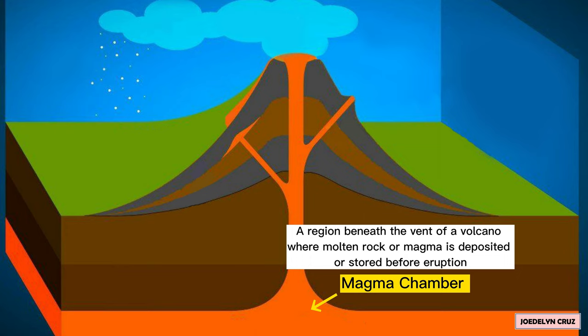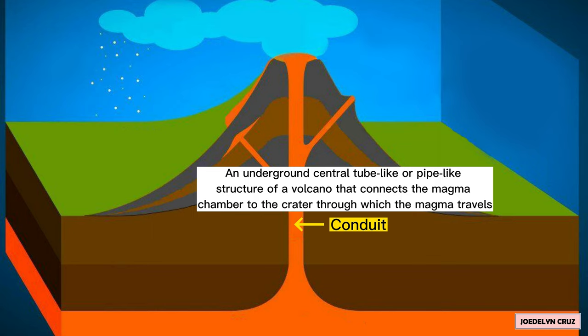Conduit. Conduit is an underground central tube-like or pipe-like structure of a volcano that connects the magma chamber to the crater through which the magma travels.